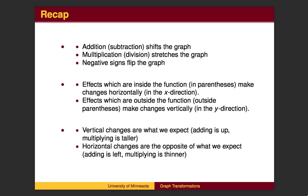Vertical changes go in the anticipated direction. Addition will shift the graph up. Multiplication will make the graph taller. In the x direction, we work backward. So the effects are counterintuitive. Addition will move left, not right. Multiplication will make the graph thinner, not wider.